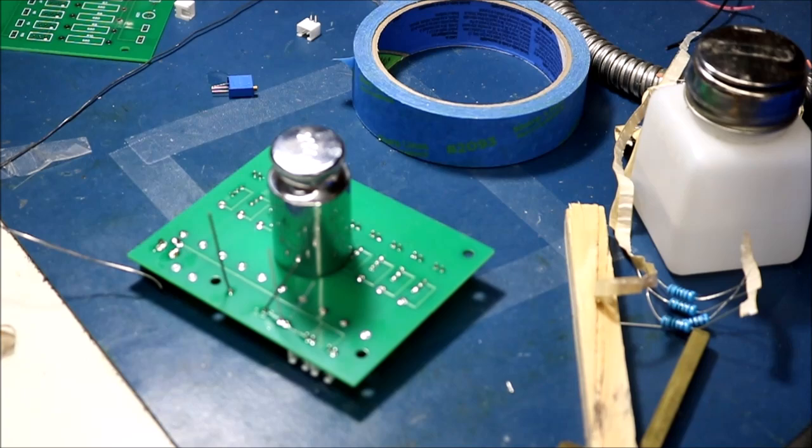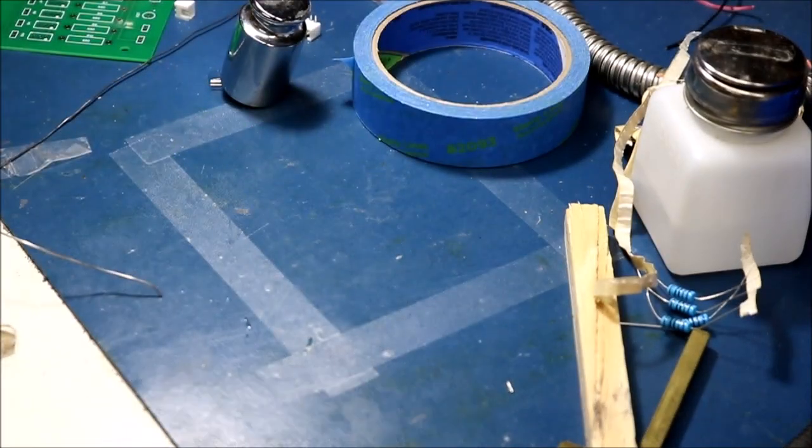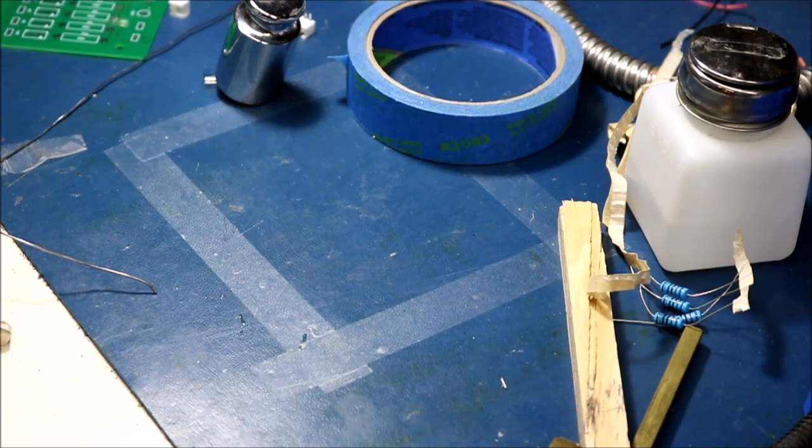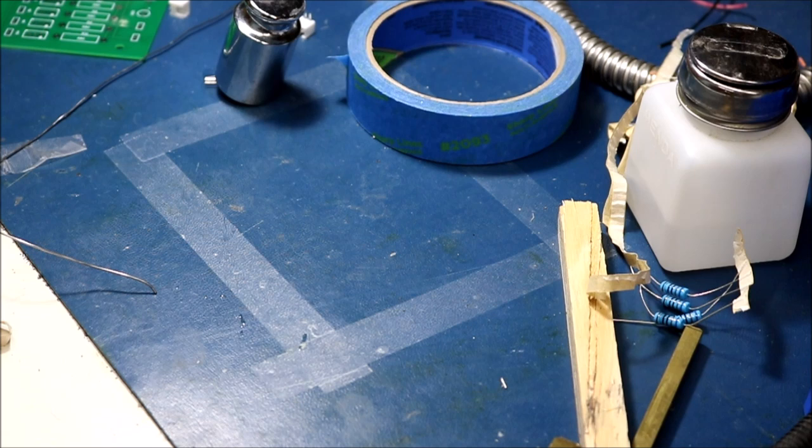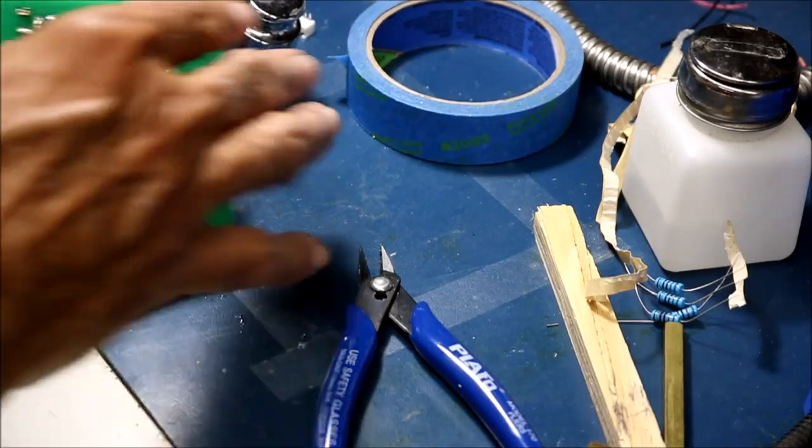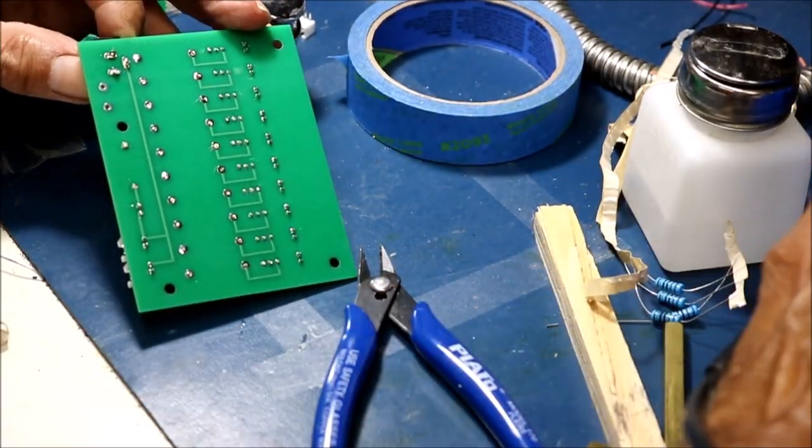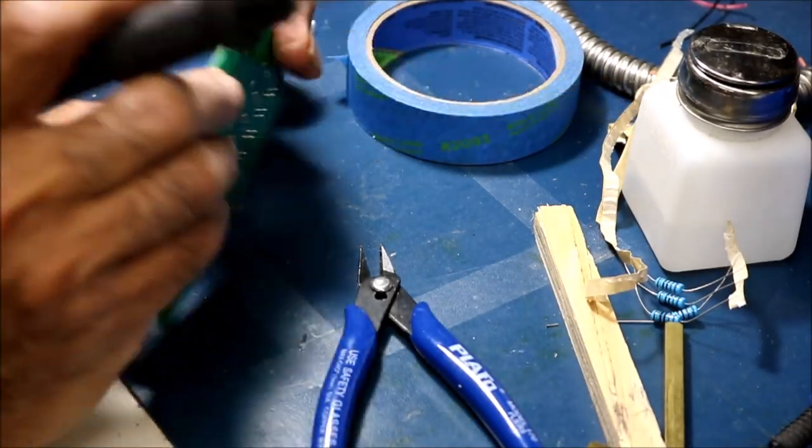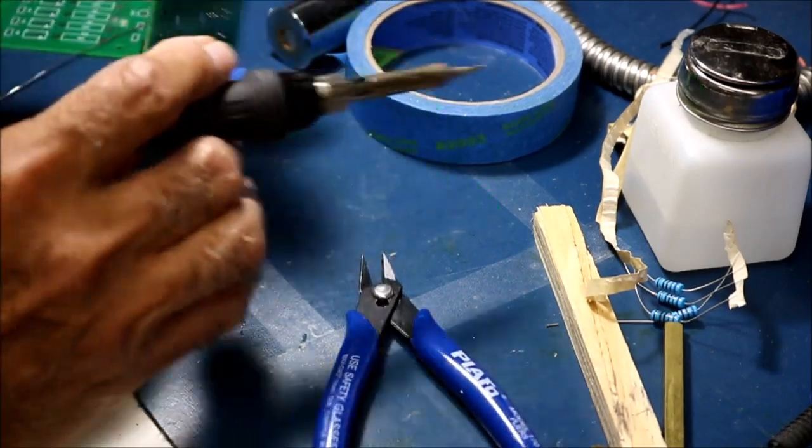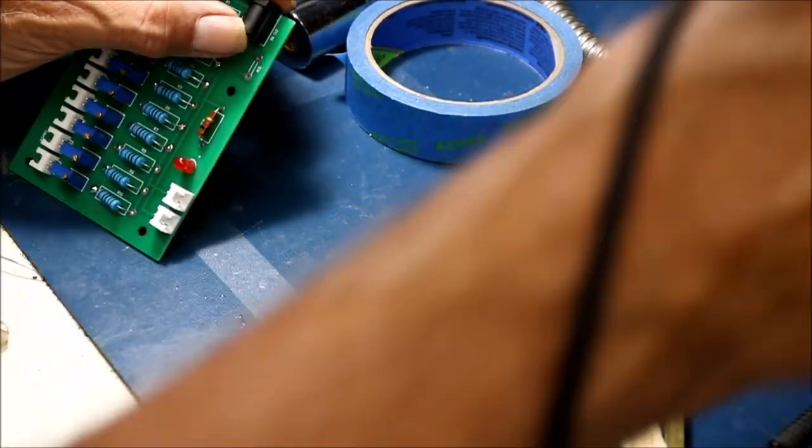Now we're done. Now I'm just going to clip off these leads like that. If you get something that's a little twisted you don't like the size, you can always reheat it and just twist it a little bit like that. Okay, that looks good.